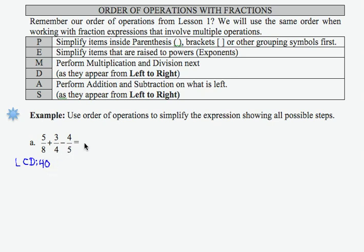I'm going to write each of my fractions as an equivalent fraction with 40 in the denominator. I'll convert all of these and then you'll see how the order of operations comes in. For the first fraction, I need to multiply top and bottom by 5, which gives me 8 times 5 in the denominator and 5 times 5 in the numerator. The second fraction, to get 40...